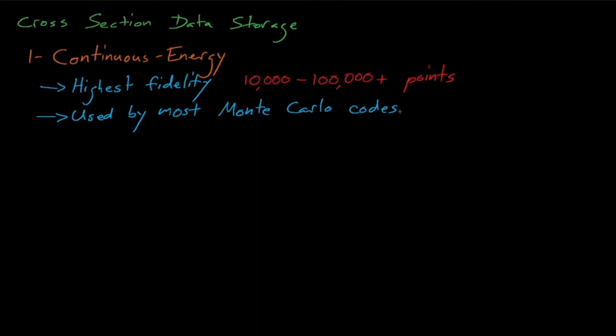The downside to continuous energy data representations is that our 10,000 to 100,000 data points requires a large amount of computational memory storage. Most continuous energy libraries require several gigabytes of memory. And while several gigabytes isn't much of a problem for our personal computers, this memory footprint can become troublesome when performing simulations on massively parallel supercomputers, especially when those supercomputers use low-memory GPU units.